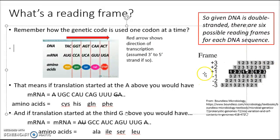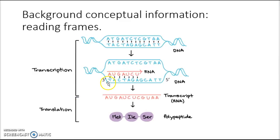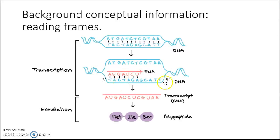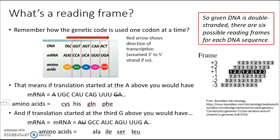That's what this cartoon is showing: frames one, two, and three, and then the next three frames written in the opposite direction. Transcription always uses the template in the 3' to 5' orientation. We're going to use the DNA in one direction if the gene sequence is on one strand, but in the other direction if the top strand represents the template. Which strand is utilized is dictated by where the promoter is located — whether it's on this strand or the other strand determines which strand is utilized as the coding strand.